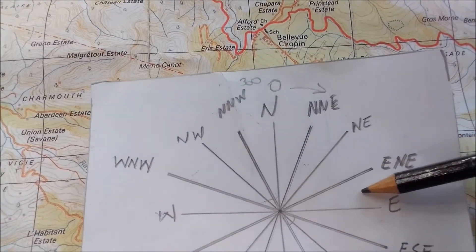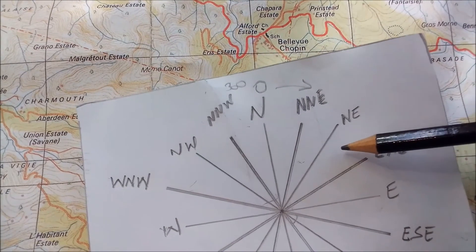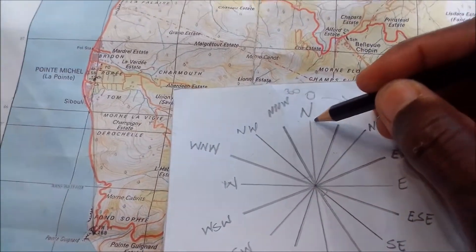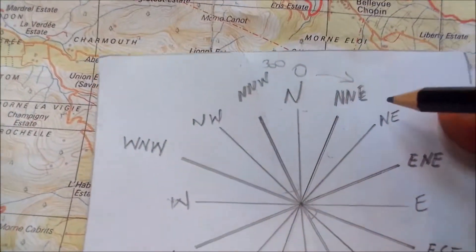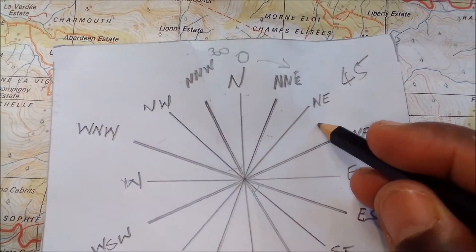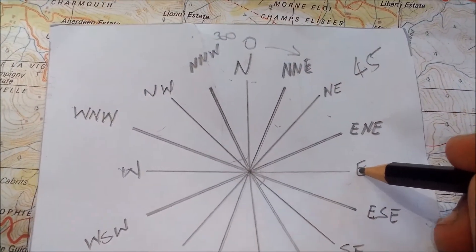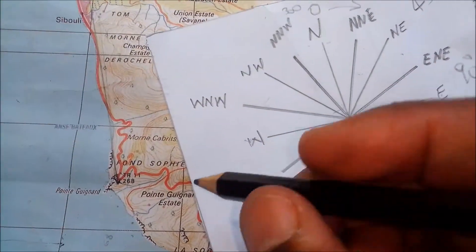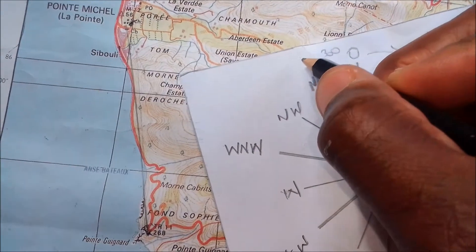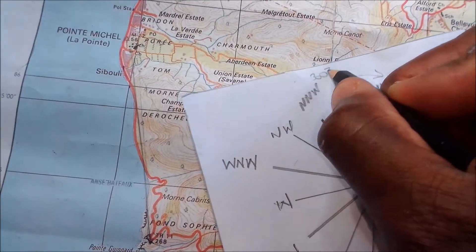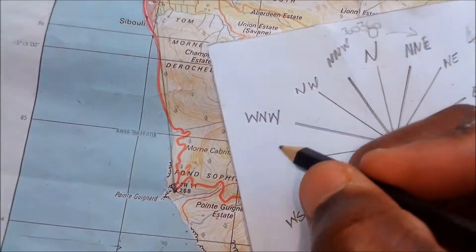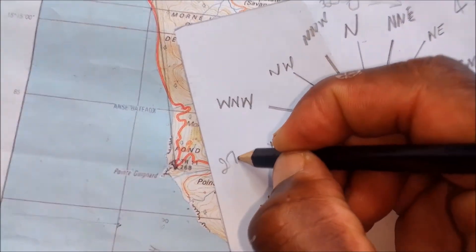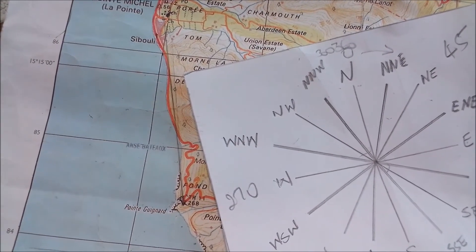Between each cardinal point there is a set amount of degrees. In between each point it's 22.5 degrees, so 22.5 plus 22.5 gives you 45 degrees. Another 22.5 plus 22.5 gives you 90 degrees. You can do this all the way around — this will be 180, and continuing around you end up with 360 back at the top. North would be 360 depending on where you're starting from, and west would be 270 degrees.